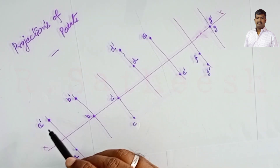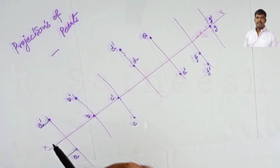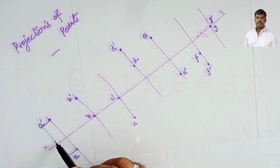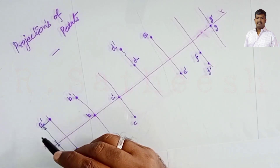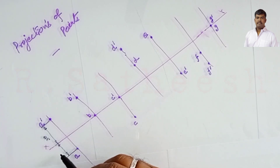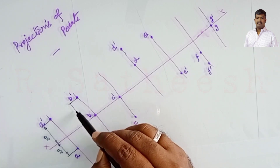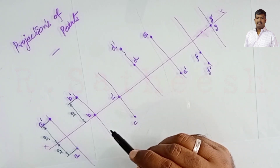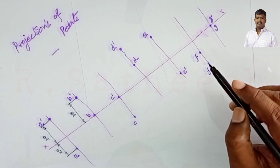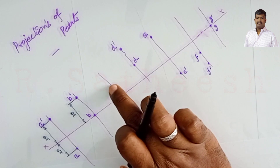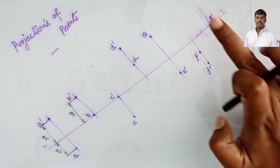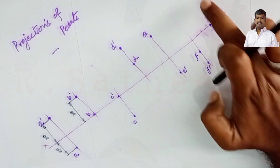For dimensioning, draw extension lines from the object points and then draw dimension lines — thin continuous lines — at about 12 to 15 mm from the object. Add arrow marks with ratio L equal to 3W. Mark the distances: point A is 30 mm above HP and 20 mm in front of VP, and similarly for all other points. Erase any unwanted extra projection lines — only the necessary lengths are needed. This is the final answer.